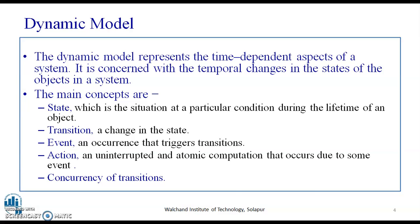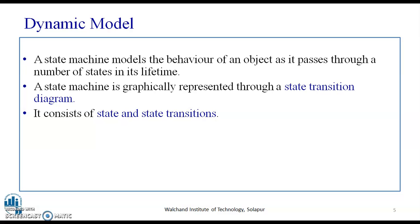What is a transition? A transition is a change in the state, and this transition happens with the occurrence of an event that triggers it. For example, the moment you turn 18 years of age, you are no longer a teenager — you are now in the adult phase. After 18 you get the right to vote, so it is an event which makes the transition from one state to another.